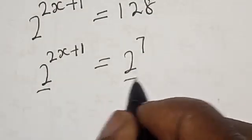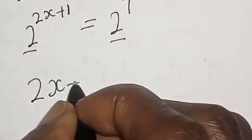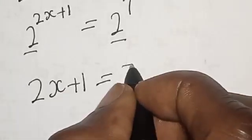Now they have the same base. This is 2s plus 1 is equal to 7.